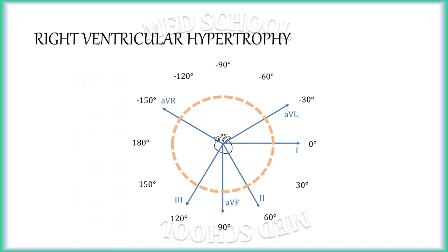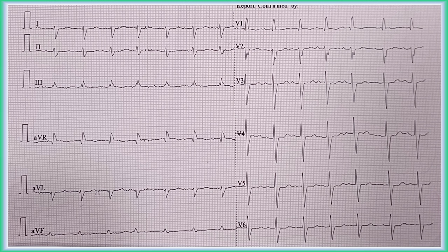When the QRS axis is present in the northwest region — i.e., between 180 degrees to minus 90 degrees — the most consistent ECG pattern will be prominent positive deflection in lead aVR and prominent negative deflection in lead II. In this ECG, there is prominent positive deflection in lead aVR along with prominent negative deflection in lead II, which indicates presence of QRS axis in the northwest region.